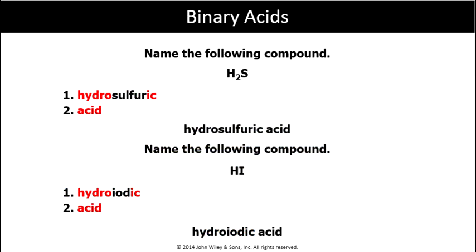Next example: H2S (aq). It has two atoms, so it is a binary acid — hydro on the left, -ic acid on the right. The name of the non-metal is sulfur, so we plug in the root. We call that hydrosulfuric acid.